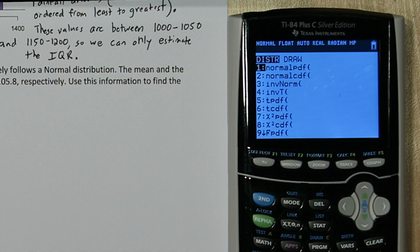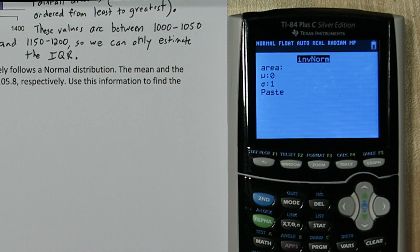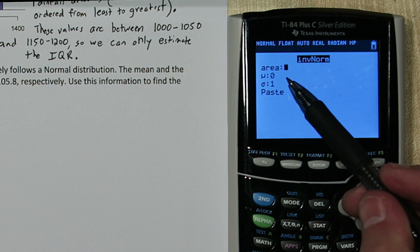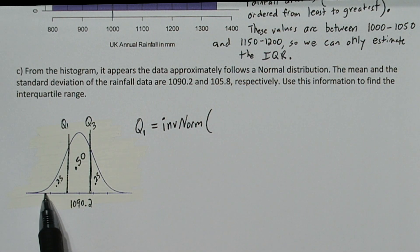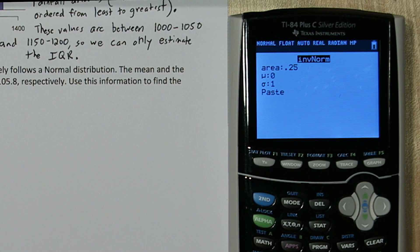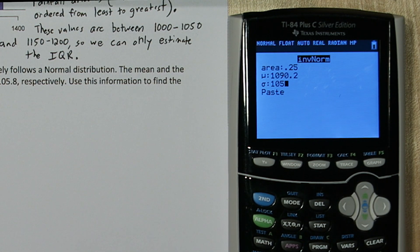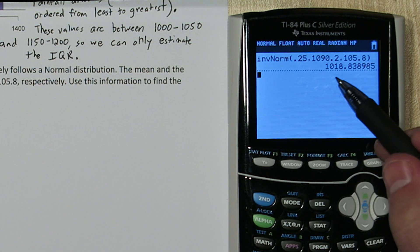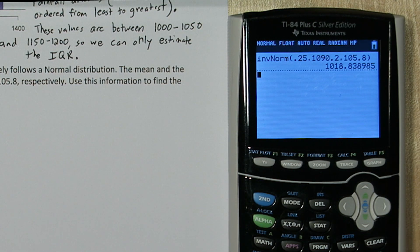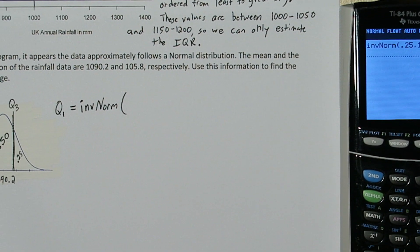If you press second, vars, you get to your distribution menu. Go to inverse norm. To find quartile one, we need to tell it how much area to the left we want. Quartile one cuts off the lower 25% to the left, so I'll put 0.25. For mean, I'm going to put 1090.2 and for standard deviation, 105.8. When I press enter on paste and then enter again, I get this cutoff value of approximately 1018.84. That's quartile one.